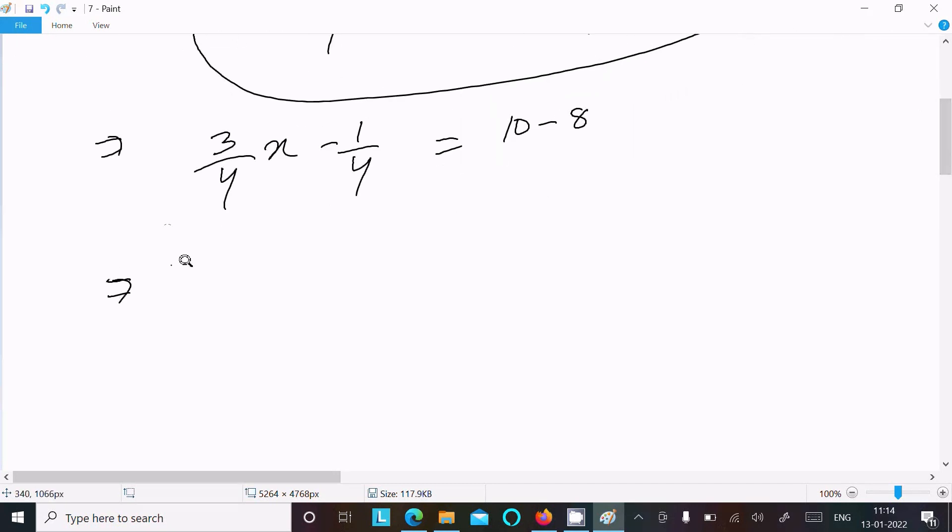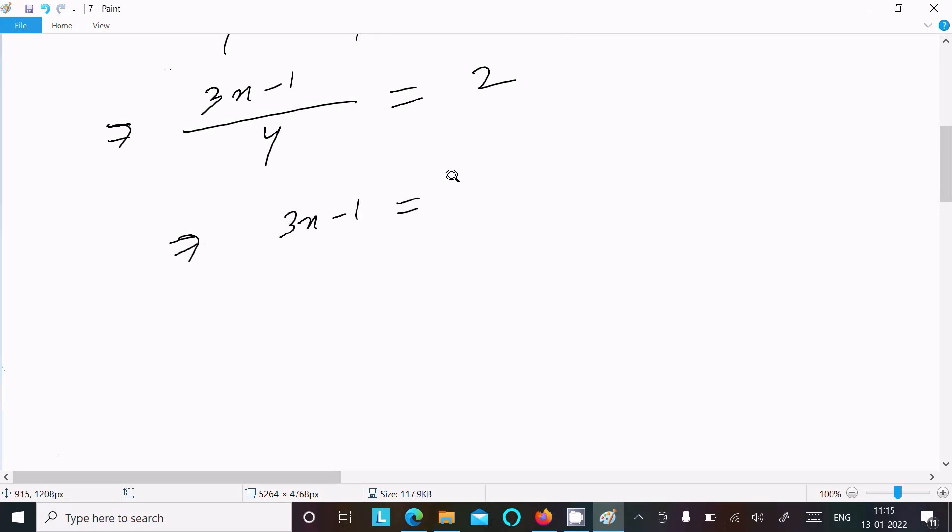This is 10 - 8 = 2. After that, if you take the LCM, it becomes 4. Here this is 3x - 1, and this is 2. So after doing this, we can write 3x - 1, and this is 2 × 4, that is 8.